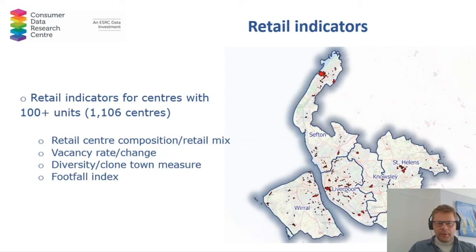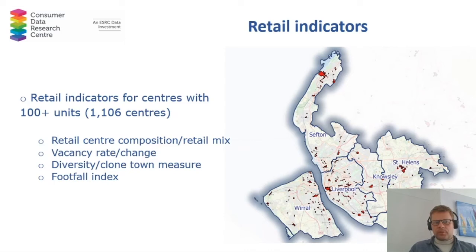What we are currently working on is a number of retail indicators. We decided to obtain them only for the larger centres with at least 100 units — so in total there will be about 1,100 retail centres that will have all those indicators. We are looking at retail centre composition, in other words the retail services mix. We also look at vacancy rate and vacancy rate change over time, which can be used to estimate retail centre economic performance. We are also interested in diversity — we would like to develop a clone town measure — and we have footfall for a number of those larger retail centres, so we create a footfall index as well.